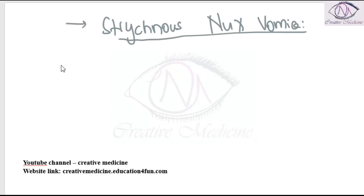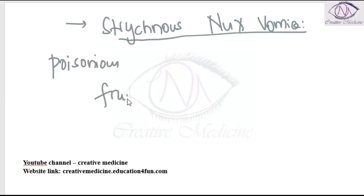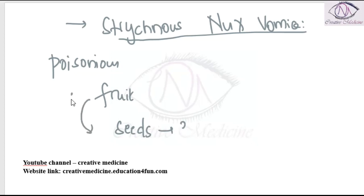All parts of the plant are poisonous, especially the fruits and seeds. Each fruit of Nux Vomica has about 3 to 5 seeds.